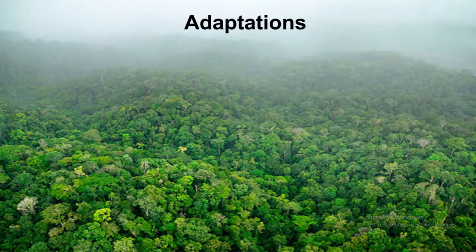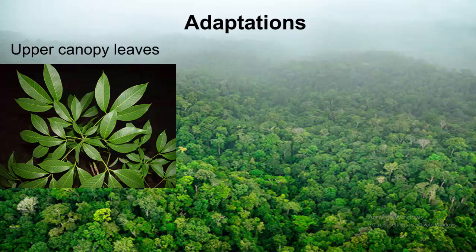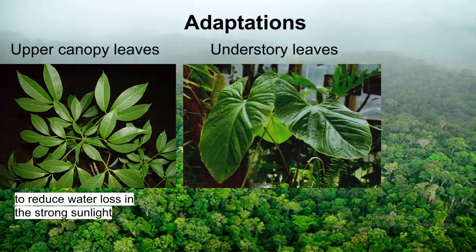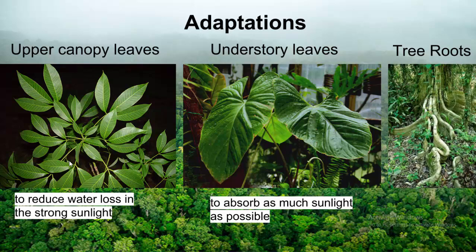Much of the wildlife in a tropical rainforest has developed adaptations in order to best survive in the environment. For example, upper canopy leaves are dark green, small, and leathery, in order to reduce water loss in the strong sunlight. On the other hand, understory leaves are very large, to absorb as much sunlight as possible. The tree roots have also adapted, with buttress and stilt roots, for extra support in the shallow, wet soil.